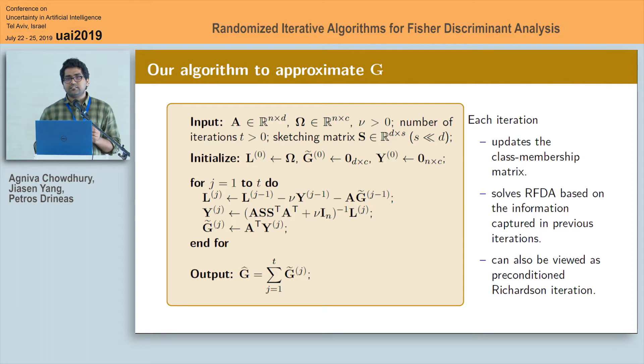Now, coming back to our algorithm, what it precisely does is it roughly solves the RFDA problem at each iteration with respect to a new matrix L_j and returns an intermediate solution vector g tilde j. Now, what is this matrix L_j? It basically contains the information about omega which were not captured in the previous iterations.